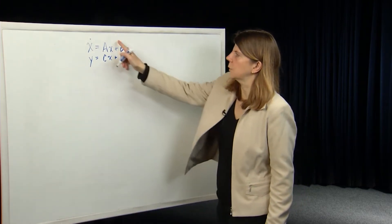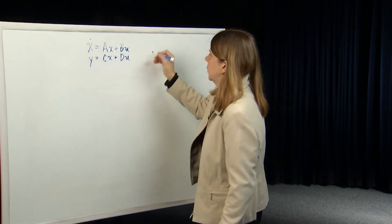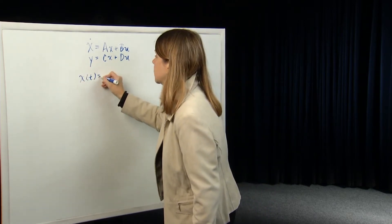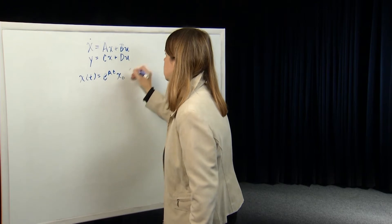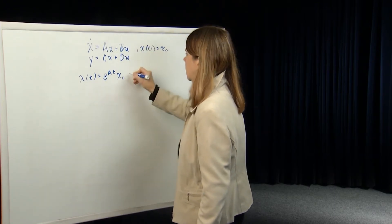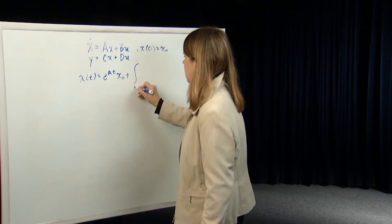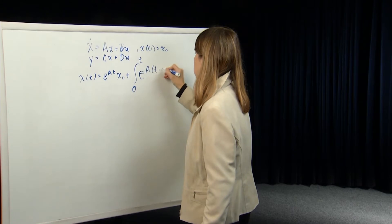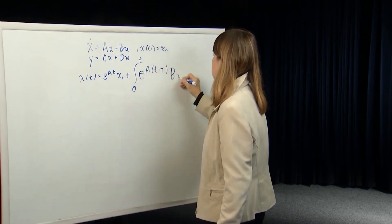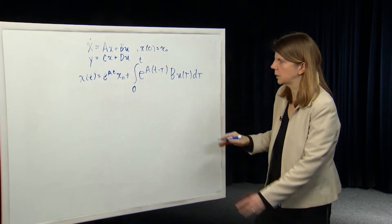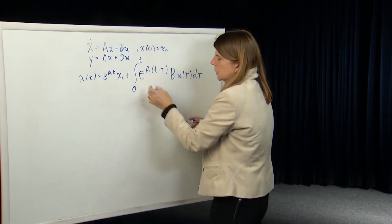And in terms of solving this equation, we know exactly how to write out the solution of the equation. So if we have an initial condition x0, then x(t) equals e to the At times x0 plus the integral from 0 to t of e to the A(t minus tau) B u(tau) d tau. So that's the solution. It involves this matrix exponential e to the At.